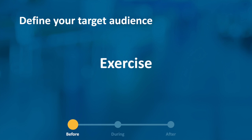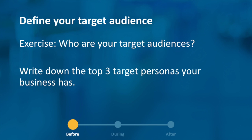The first exercise: in your worksheet, the first column is to write down your top three target personas that your business has. If you have fewer than three, that's okay — less homework. Take a minute, pause the video, and write down those top three target personas.